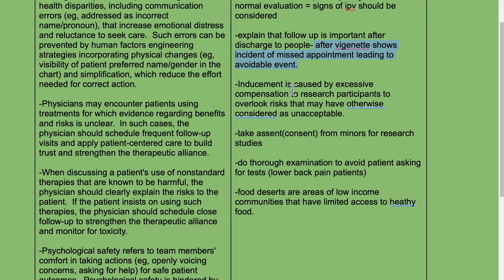Inducement is caused by excessive compensation to research participants, causing them to overlook risks they may have otherwise considered unacceptable — for example, giving six months of pay for two months of research with minimal time commitment. That is called inducement.